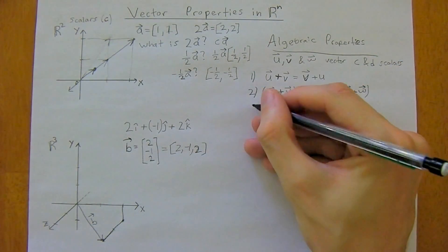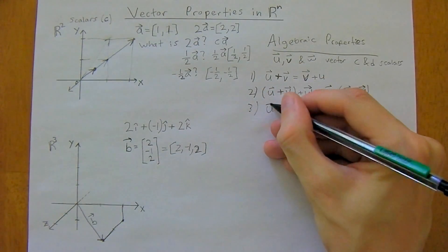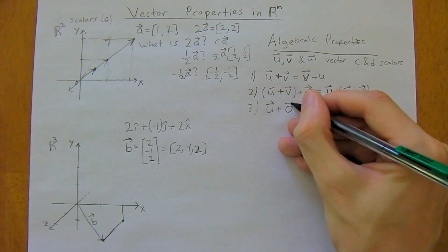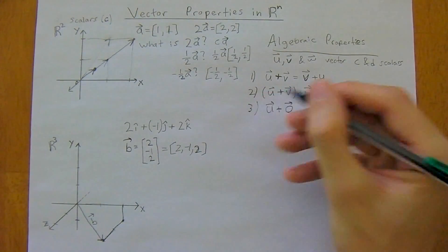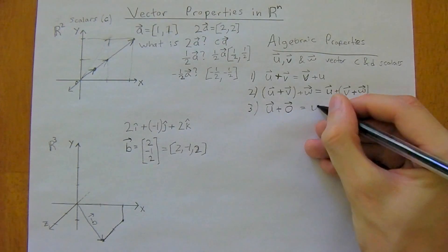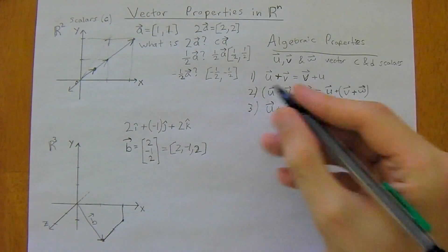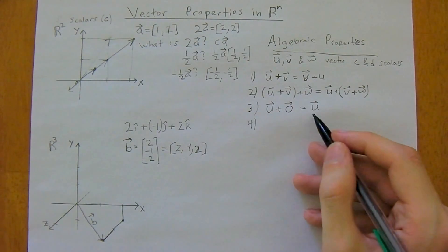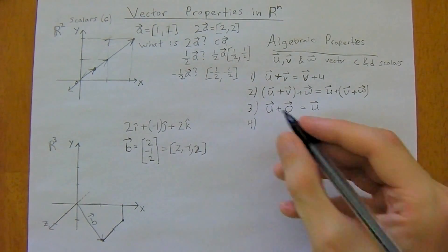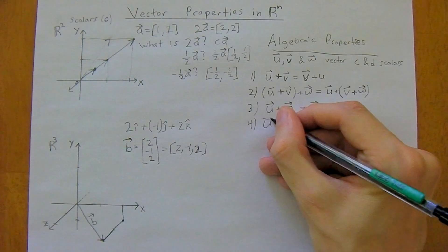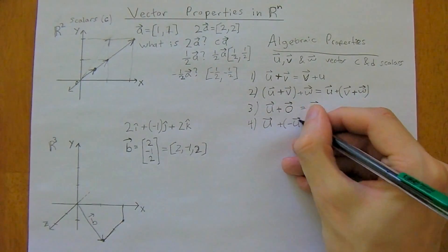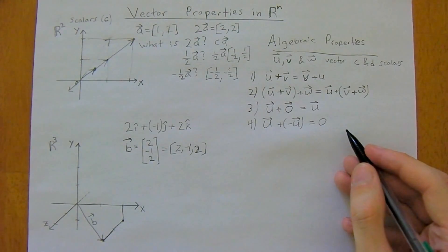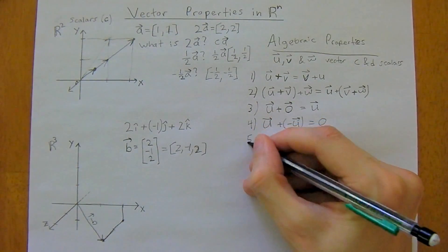And then third property is any vector plus the zero vector, so zero is an actual unique vector, is just equal to that first vector. The fourth property, that one's pretty straightforward, you know, anything plus zero, you can think of it just like regular algebra. Then so u plus negative u is equal to zero, so anything minus itself is zero, again, still keeping it pretty simple.